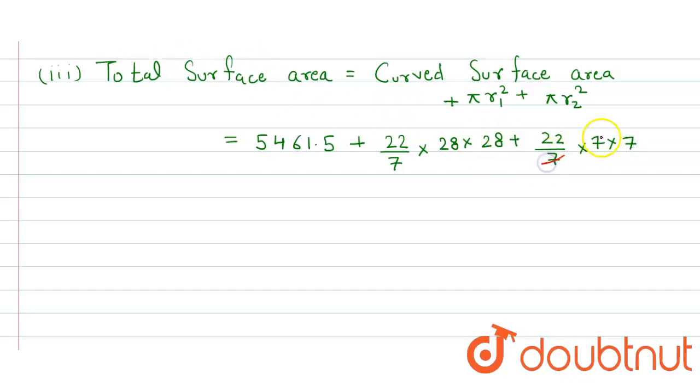So here again this 7 will just simply cancel this one, and here it will get 4, so that one will be equal to 5,461.5 plus 88 × 28 plus 22...